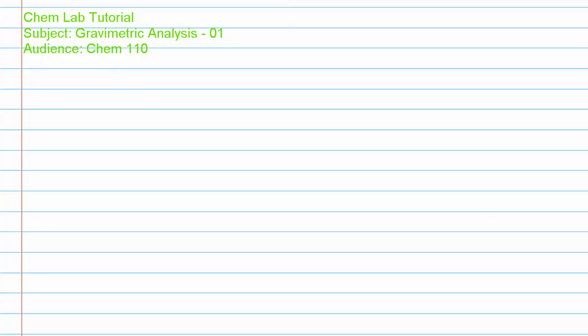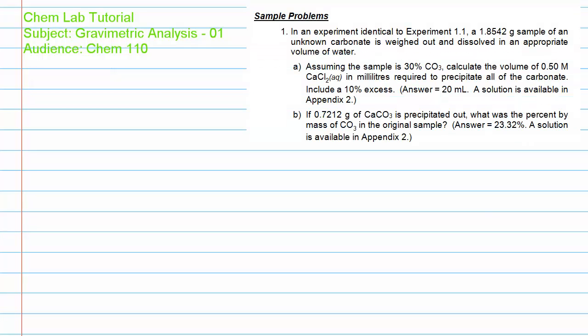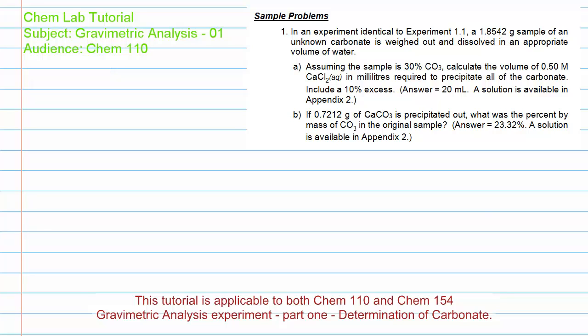This lab tutorial is meant to go over, or provide guidance to you, on solving problem number one in the study guide for the gravimetric analysis experiment. Here's the problem as it appears in the study guide of the CHEM 110 lab manual. It deals with the calculations which have to be performed on the acquired data in order to obtain the desired result. But before going over this problem, I think it's better to first go over the basic chemistry of what's involved in the first part of your gravimetric analysis experiment.